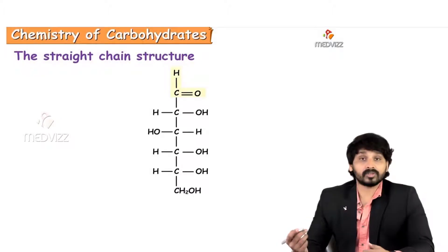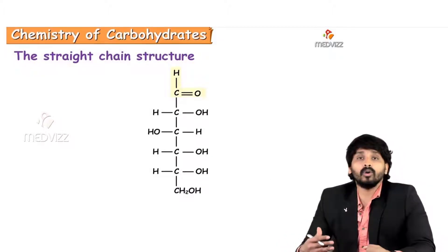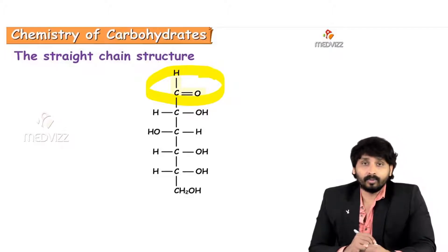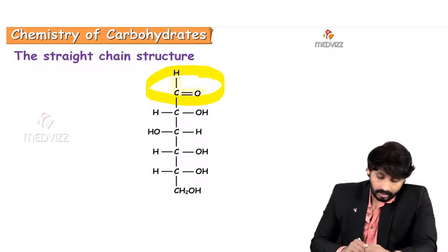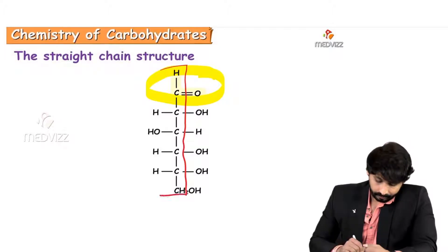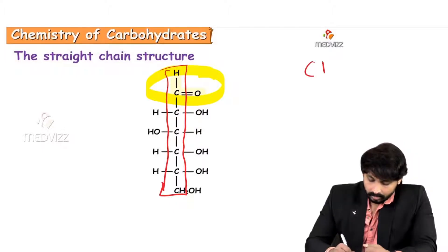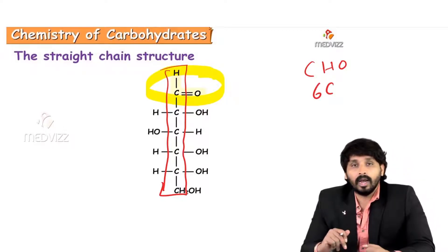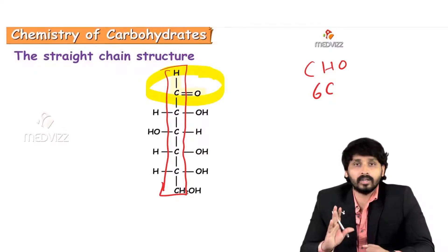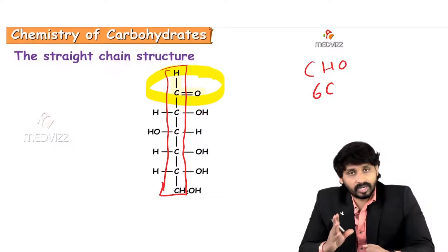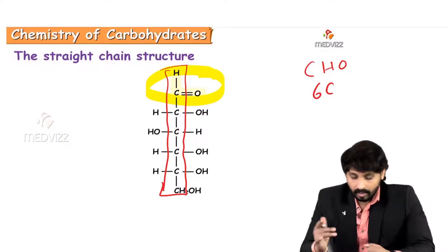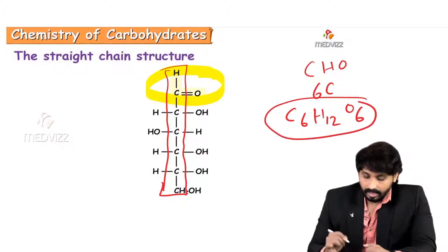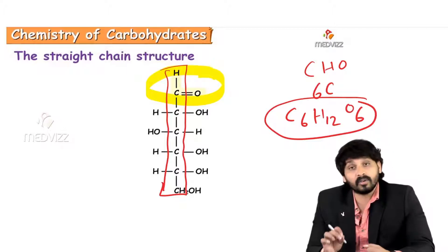This is the straight chain structure of glucose. Being an aldohexose, we can see the aldehyde group and the number of carbons — six carbons. This straight chain structure of monosaccharides was first elucidated by Emil Fischer, and it is known as Emil Fischer's straight chain projection formula. The molecular formula is C6H12O6, meaning six carbons, twelve hydrogens, and six oxygens.